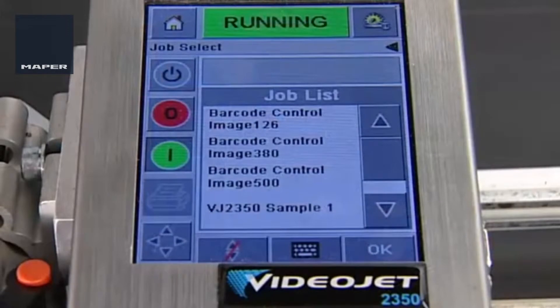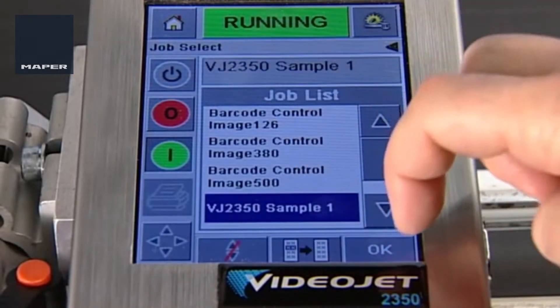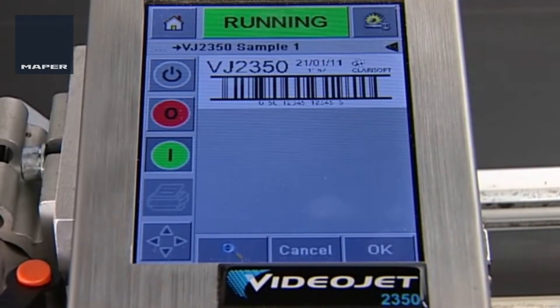On the display will be a list of different jobs available in the local memory. You can select, edit, and view the job on the What You See Is What You Get display before selecting it for printing.